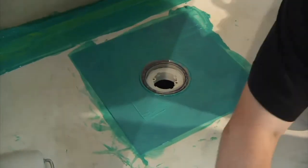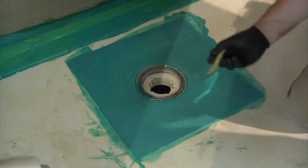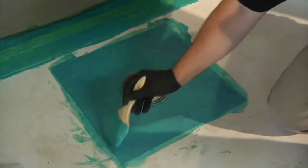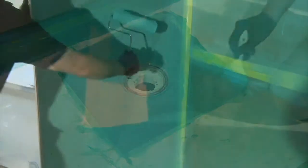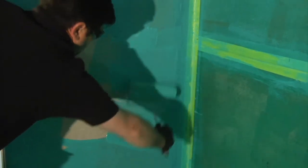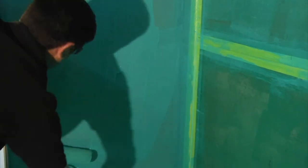We always recommend that you waterproof outside the shower into the rest of the bathroom space. This is what makes it a European wet room. You can use the same tape and the same techniques that you used inside the shower to cover the joints of your tile backer throughout the rest of the bathroom.